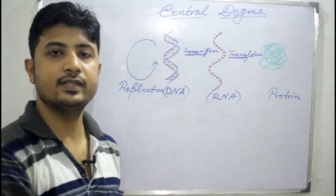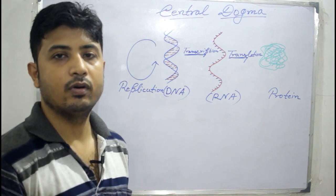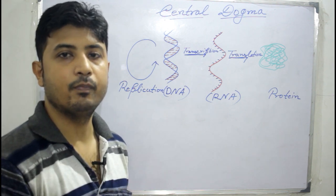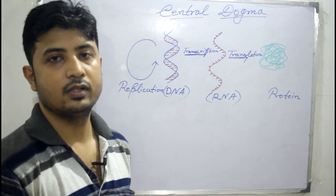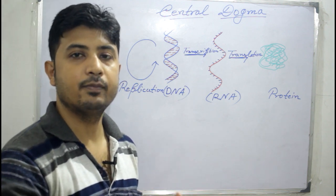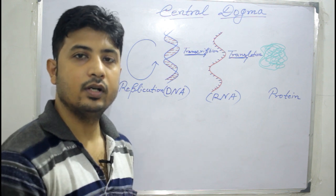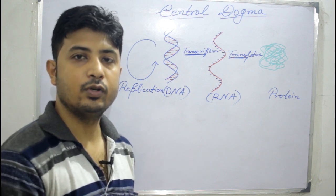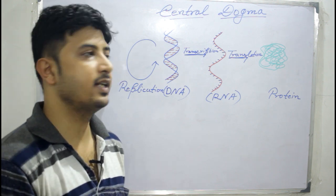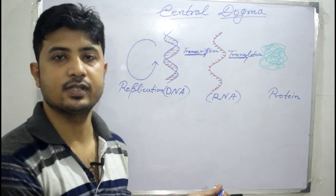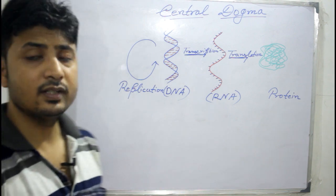This is the process occurring when a life form goes from one generation to another. For example, when your father and mother produce a progeny, that is decided by these molecular processes.